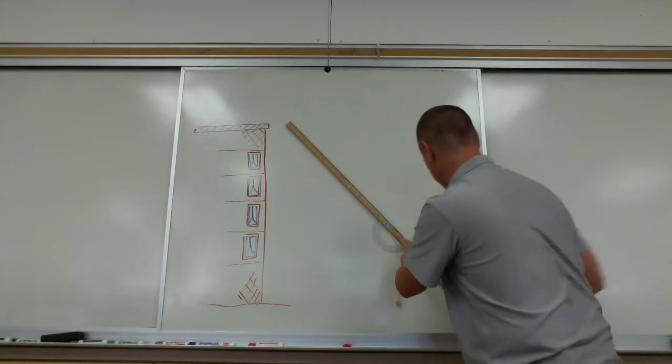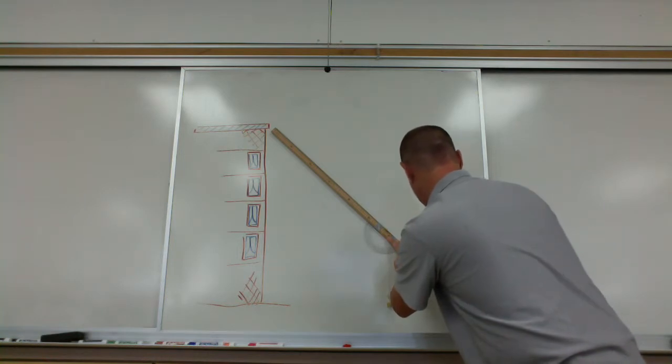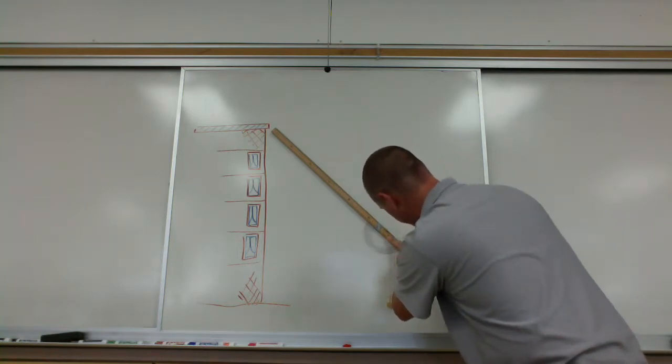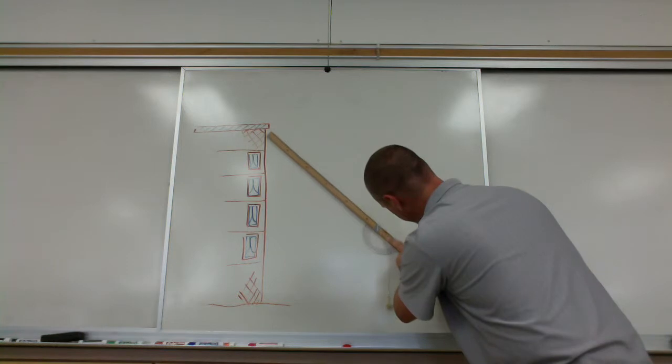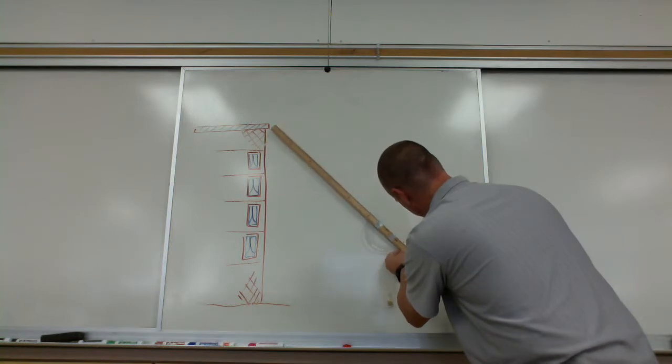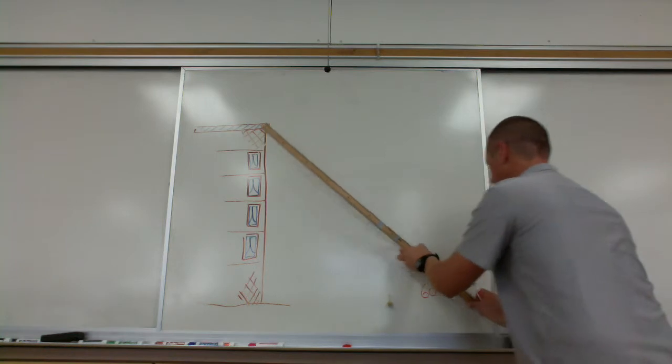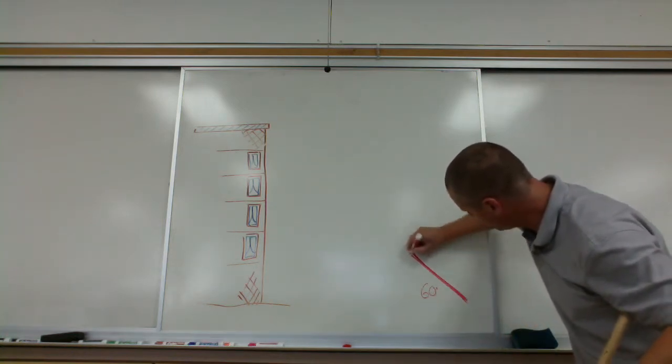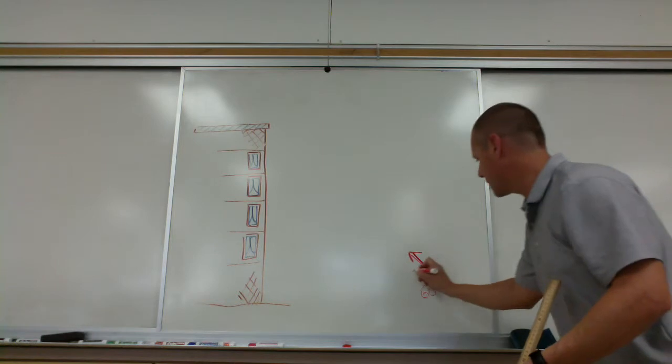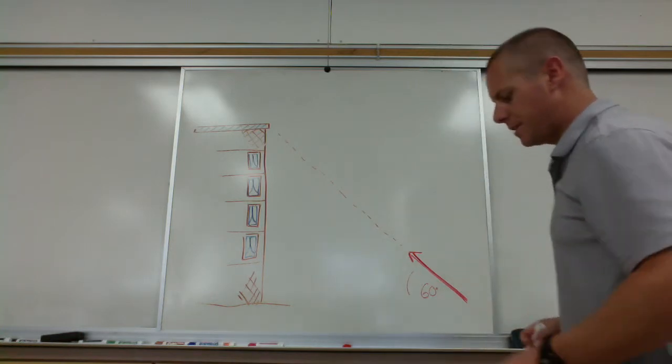Because we're going to be determining the heights of some buildings on campus. Something like this, and the angle is 60 degrees. So that's what we're going to use this quadrant for, measuring the angle when we point at something too high for us to touch.